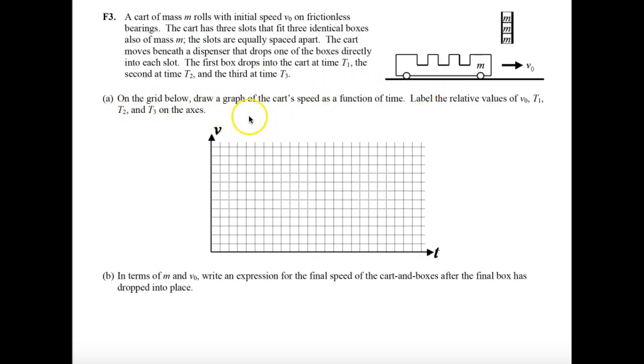On the grid below, they want us to draw a graph of the cart's speed as a function of time, and then they want us to label relative values of the original speed, time one, time two, and time three on the axis. So here we go, let's go ahead and start this. We probably need to put that original speed right at the top, so here's our original velocity, and we're going to say that that happens for just a little tiny bit of time for the cart to get over to pick up the first mass.